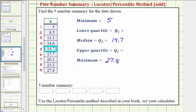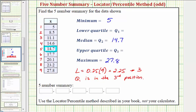So the locator for Q1 is going to be equal to 0.25 times n, which is 9, which is equal to 2.25. Rounding up to the next whole number, we would have 3, which means Q1 is in the third position.